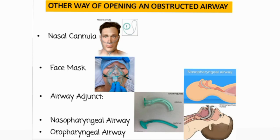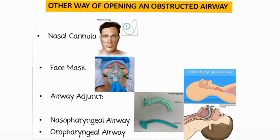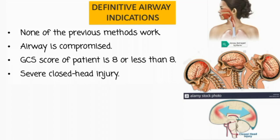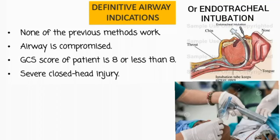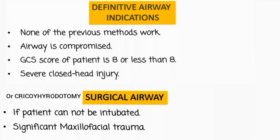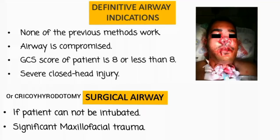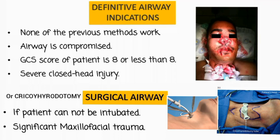Other ways of opening an obstructed airway include using a nasal cannula, face mask, or an airway adjunct like nasopharyngeal or oropharyngeal airway. If none of these methods work, or the airway is compromised, or the GCS score is 8 or less, or there is severe closed head injury, then endotracheal intubation becomes necessary — also known as definitive airway. If the patient cannot be intubated, such as in significant maxillofacial trauma, cricothyroidotomy should be performed, known as the surgical airway.